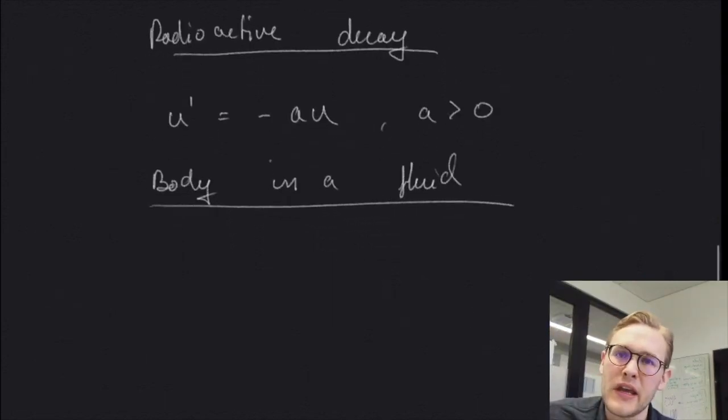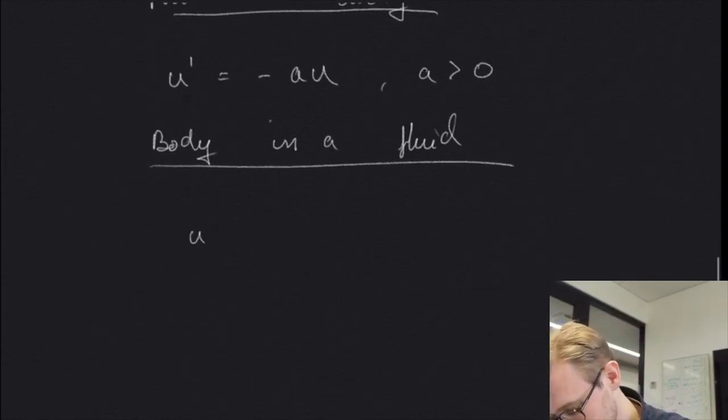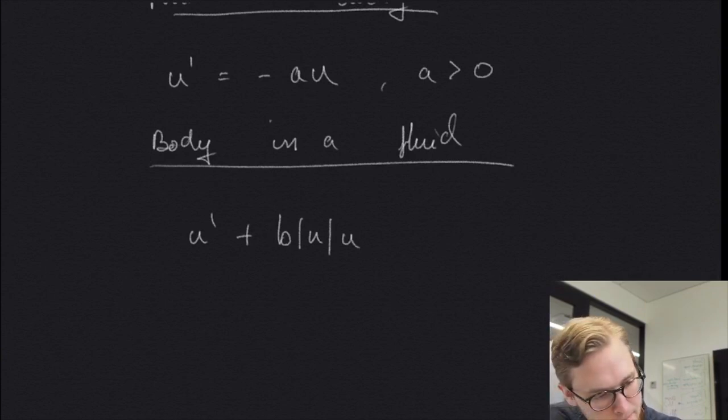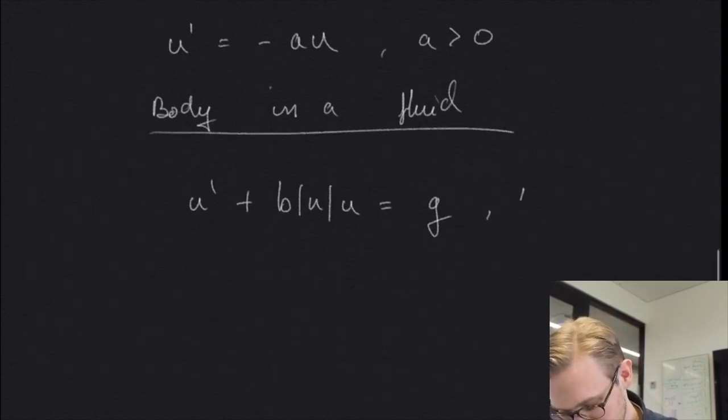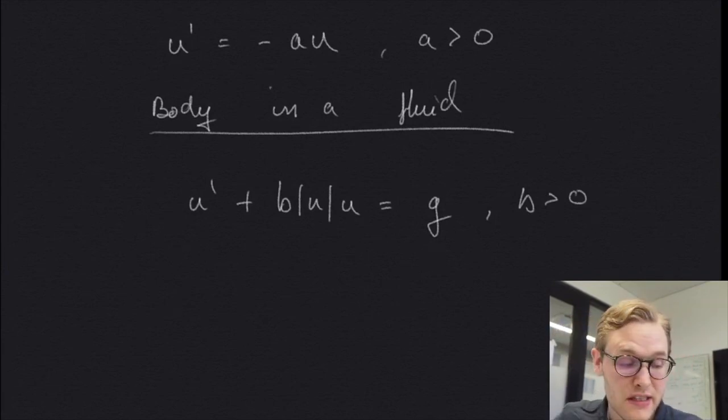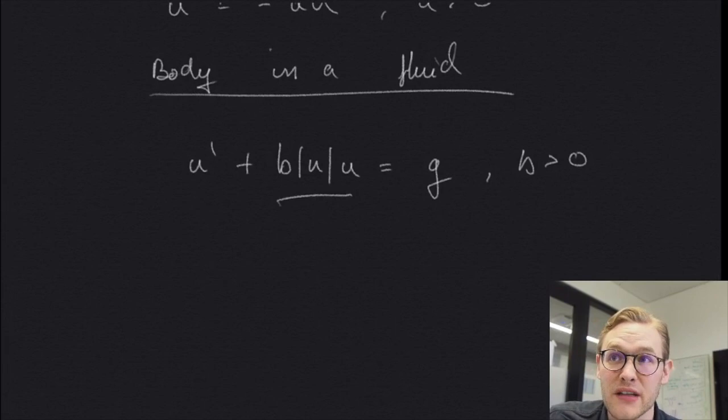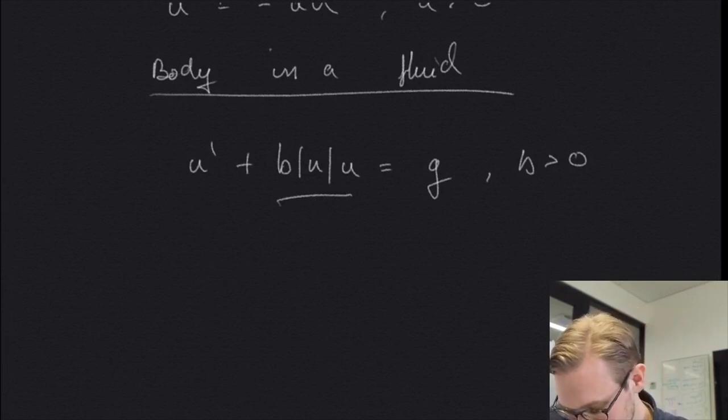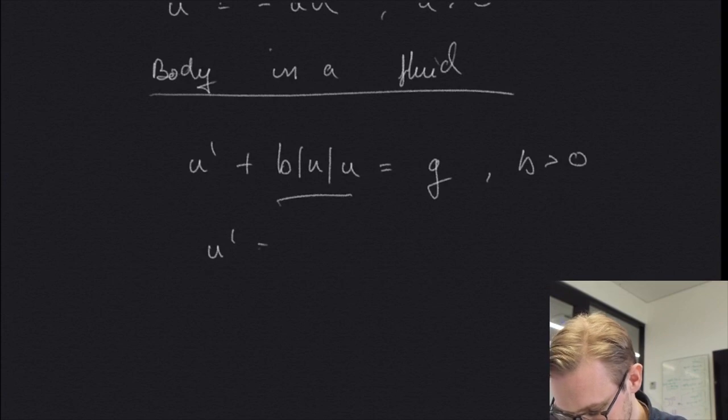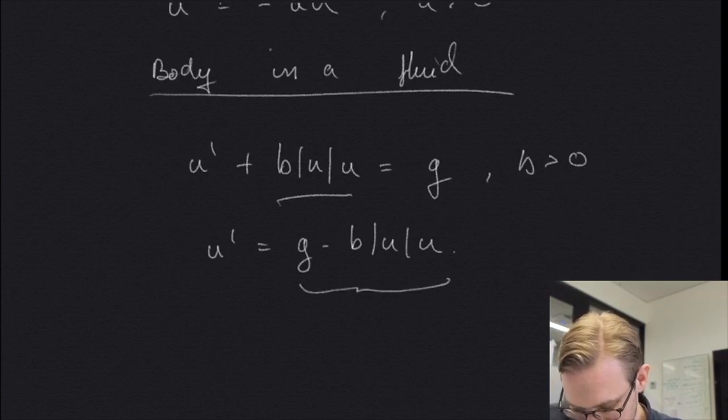We can model a body in a fluid by the following equation. u derivative plus b times the absolute value of u times u equals gravitational acceleration. So here b must be larger than zero and is the resistance in the fluid, and u will be the body's velocity. So you can recognize this as some friction term or drag term. Now if we rearrange this somewhat, we see that we can also get this on our wanted standard form, like so. Where again, the right hand side is indeed some function dependent on u and t.